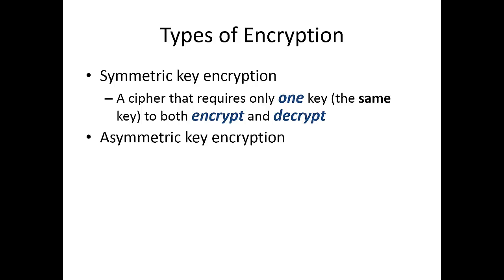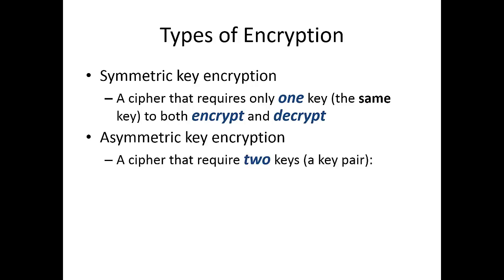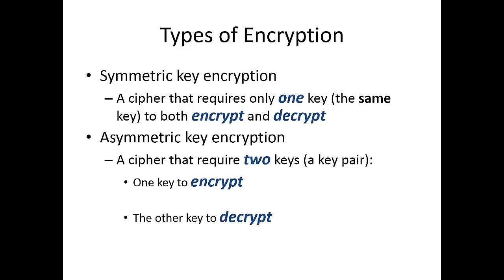Asymmetric key encryption uses different keys to encrypt and decrypt. You can say that asymmetric key encryption is a cipher that requires two keys — a key pair. One key to encrypt and the other key to decrypt. Usually the key we use to encrypt is called a public key, and the key used to decrypt a message is called a private key.